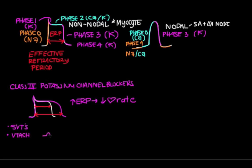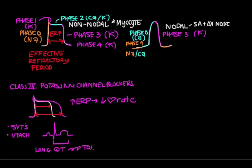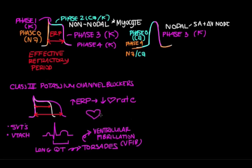An important note: phase 3 of the action potential corresponds to your QT interval on an EKG. Since potassium channel blockers elongate phase 3, they also elongate your QT interval. Elongating the QT interval is dangerous because it can lead to a dangerous rhythm called torsades, which is a type of VTAC. Torsades is also dangerous because it can disintegrate into ventricular fibrillation, or V-fib, where the bottom chambers of the heart are spasming and nothing is contracting, so you're not pumping blood to the rest of the body. That's why V-fib is deadly if not treated immediately.